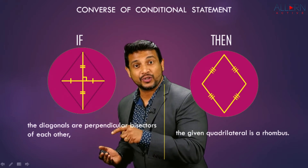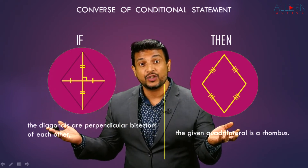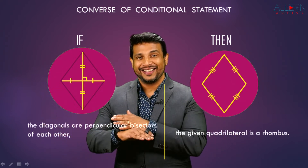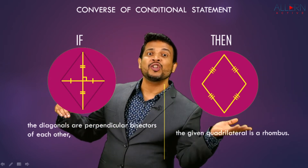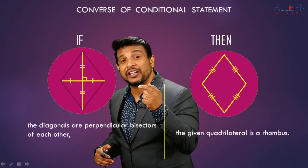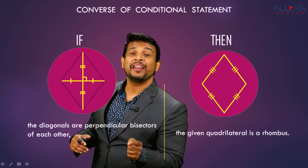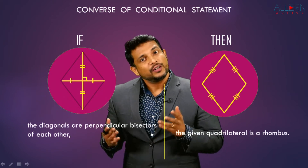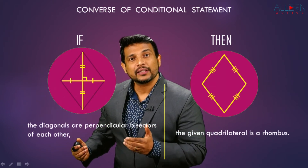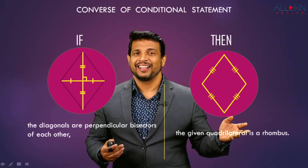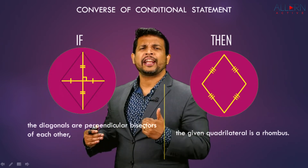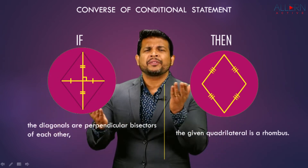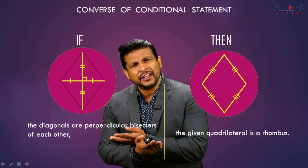We swapped the places of the antecedent and the consequent. Whatever was the consequent has become the antecedent and vice versa. The converse statement is: if the diagonals are perpendicular bisectors of each other, then the given quadrilateral is a rhombus — and this is true. For writing a converse, we simply swap the antecedent and consequent.